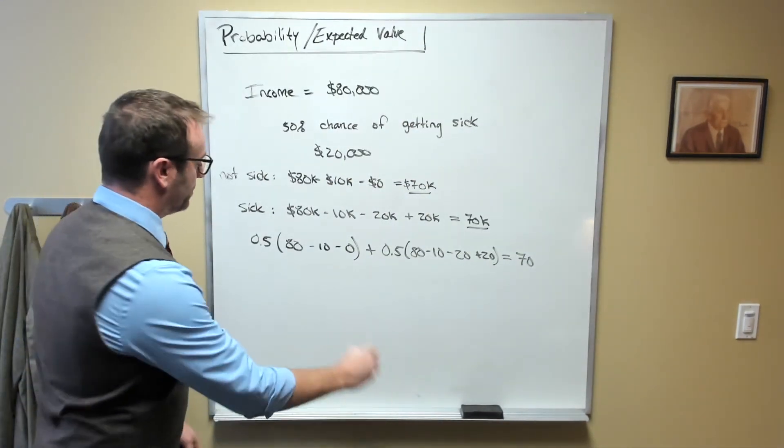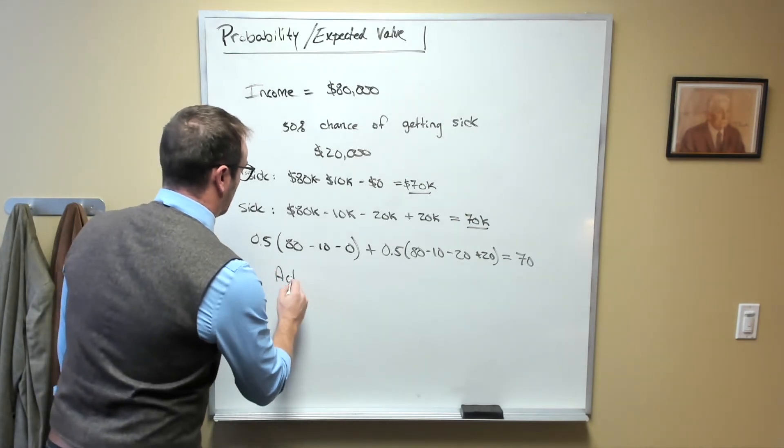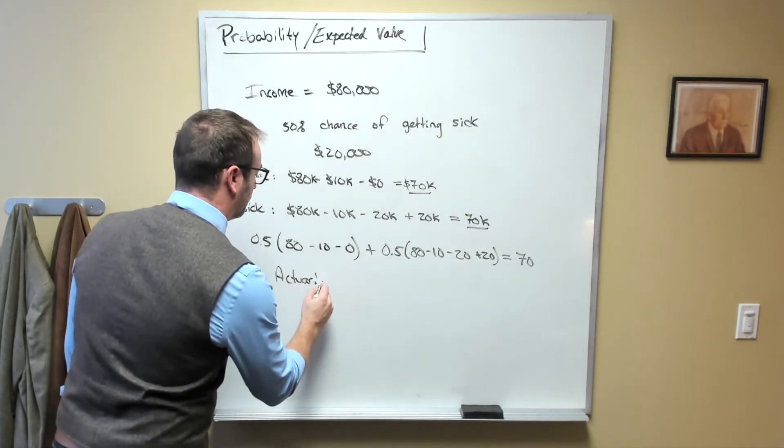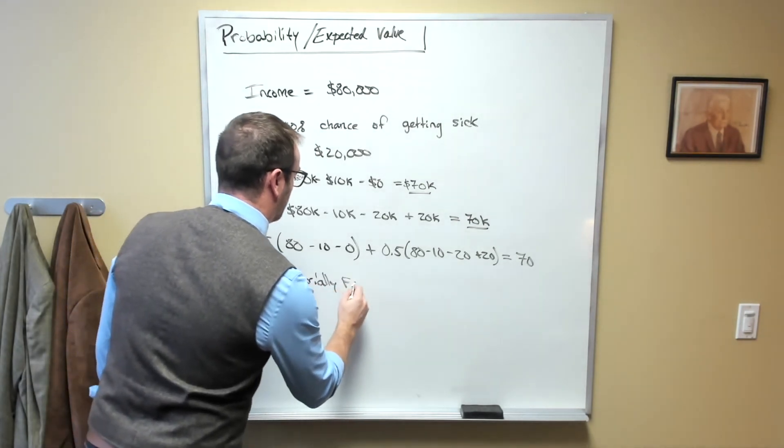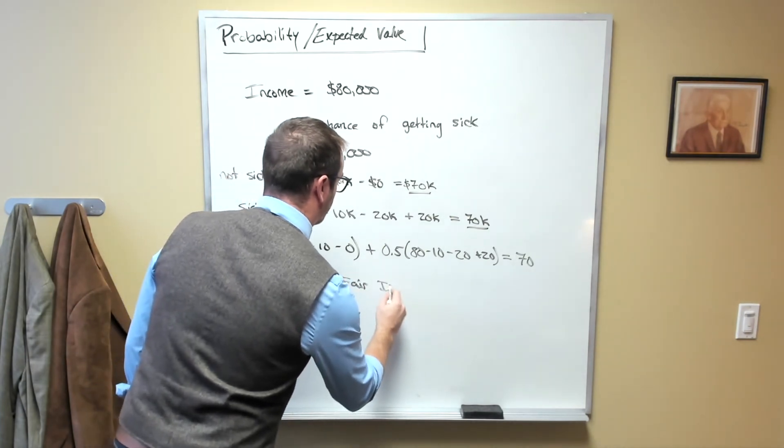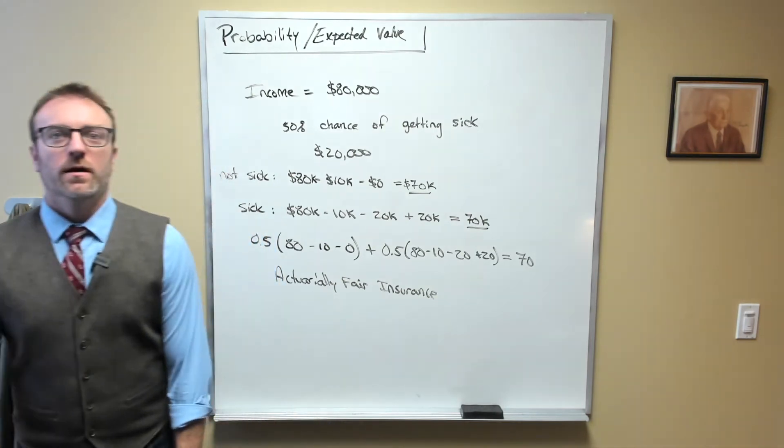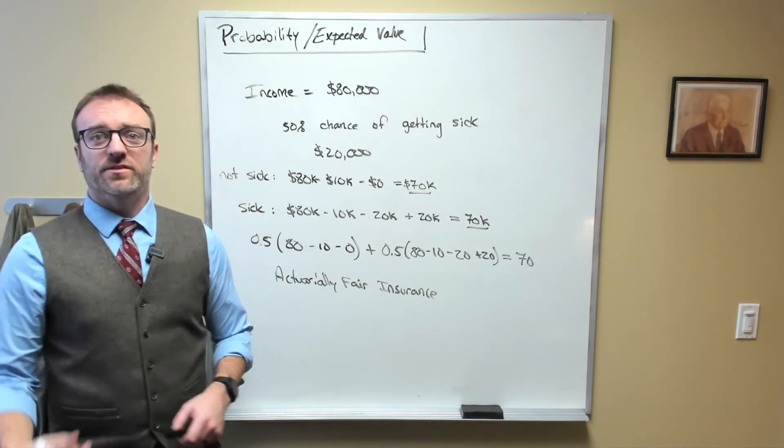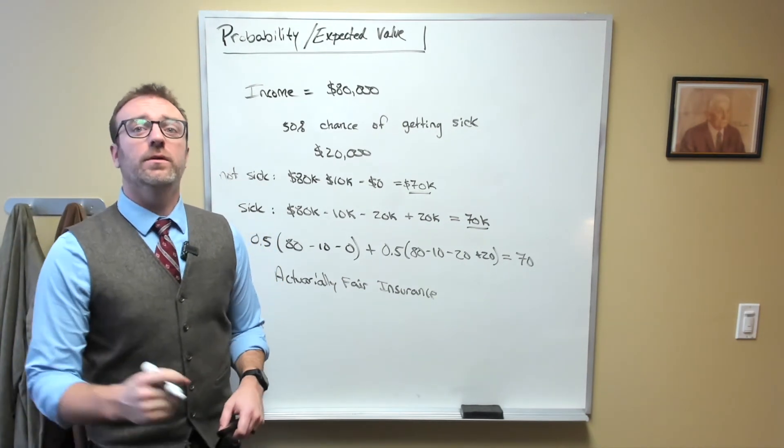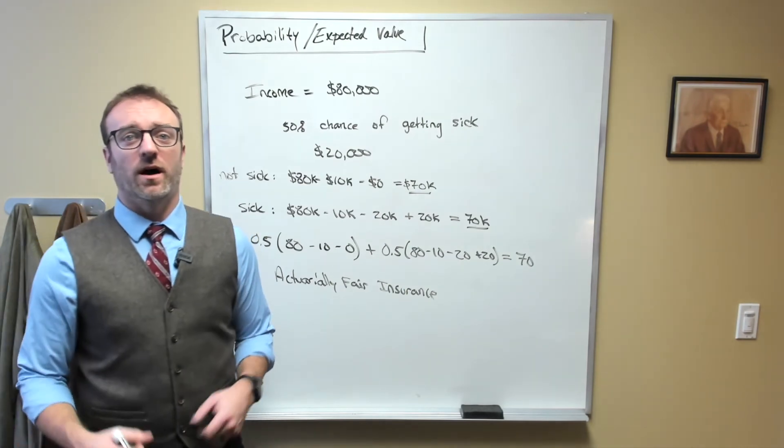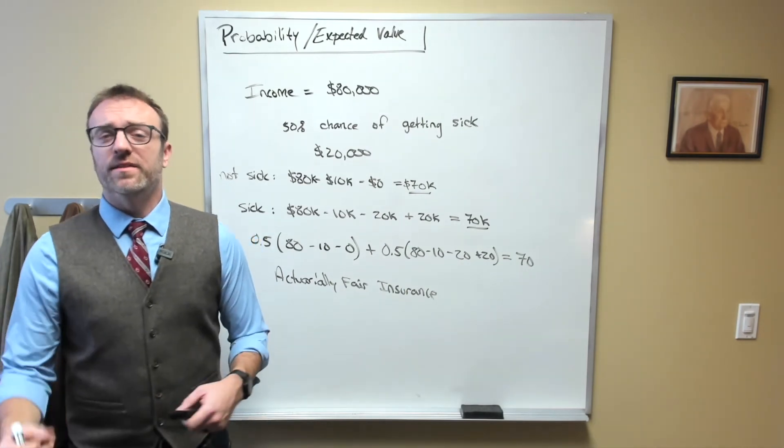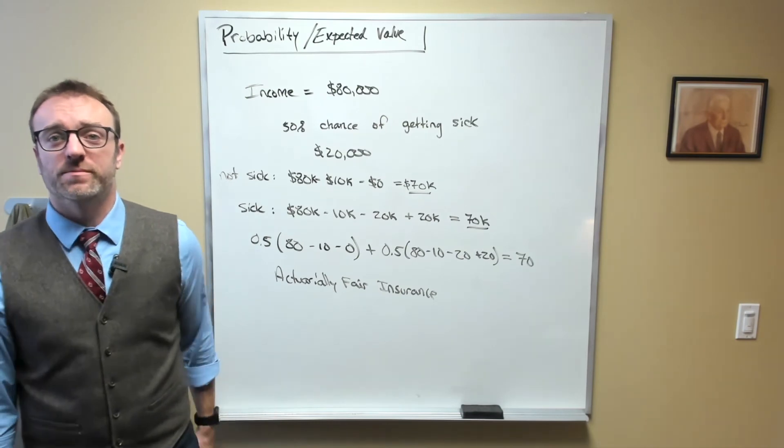This situation is known as actuarially fair insurance. The price of the policy is equal to the amount of money per year that you expect to pay on average for, in this case, your health, or rather your health treatment.